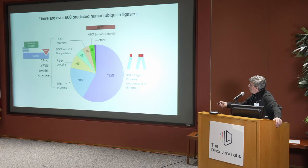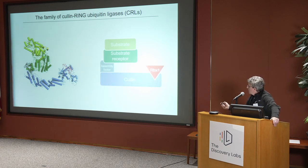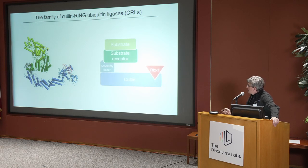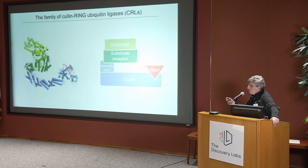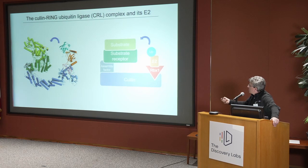What we study in our lab is the family of cullin ring ligases — these are multisubunit ubiquitin ligases, and there are more than 200 members of this family. There is a cullin subunit in all CRLs, which is a sort of scaffold protein that holds at the C-terminus the ring finger protein. At the N-terminus binds an assembly factor, which brings the substrate receptor, which binds specifically to downstream substrates. The ring finger protein is necessary to bind the ubiquitin-conjugating enzyme, or E2, which brings the ubiquitin to the substrates.